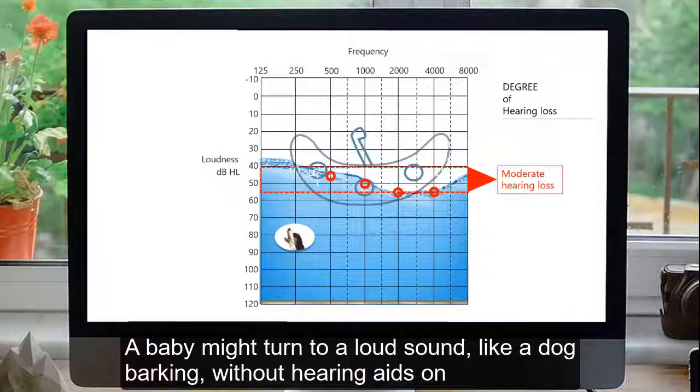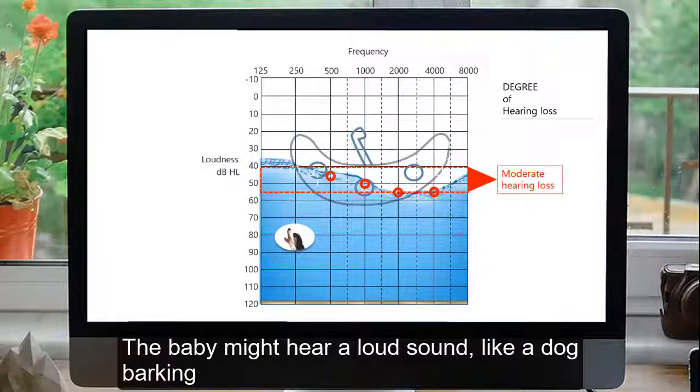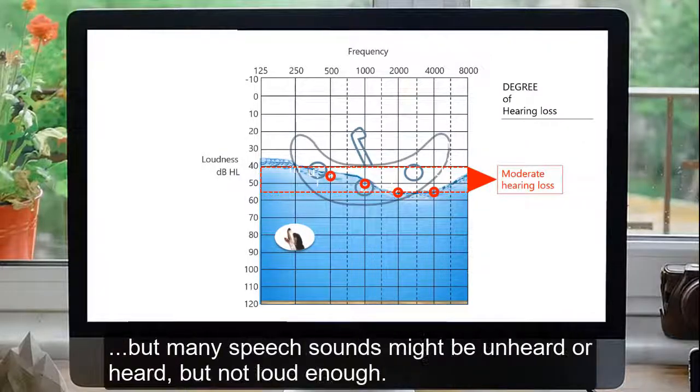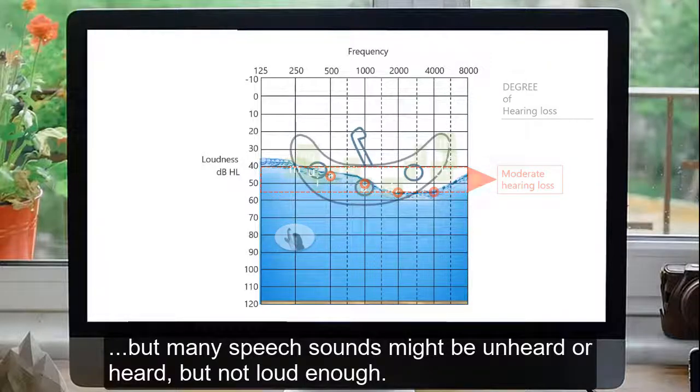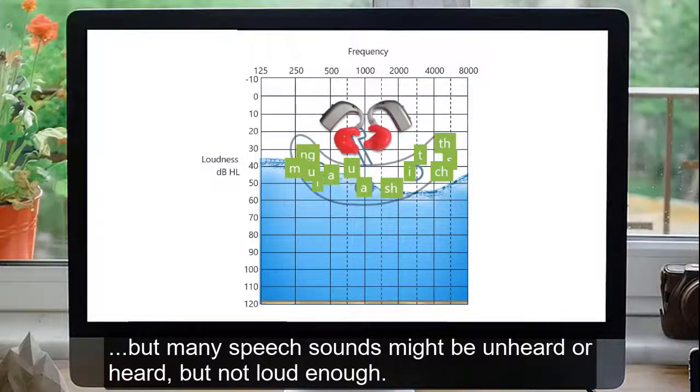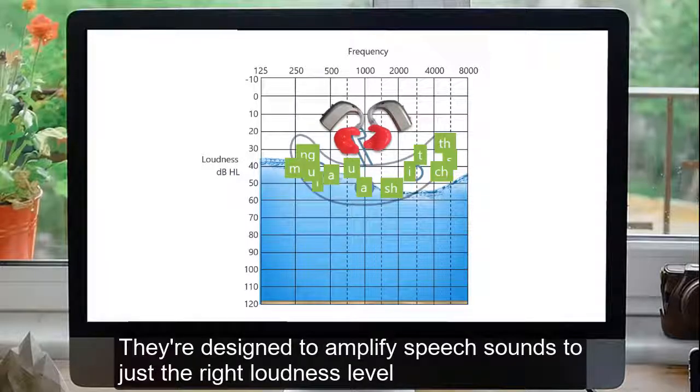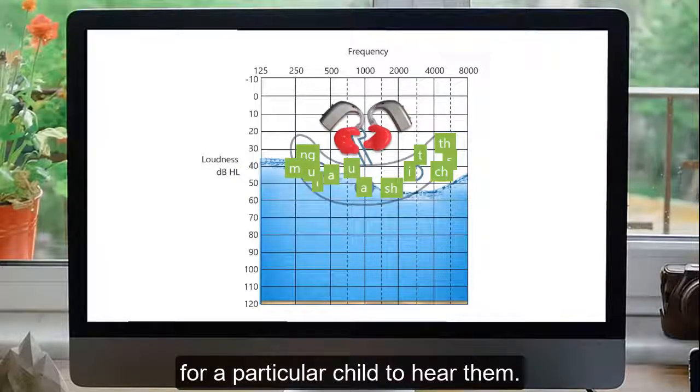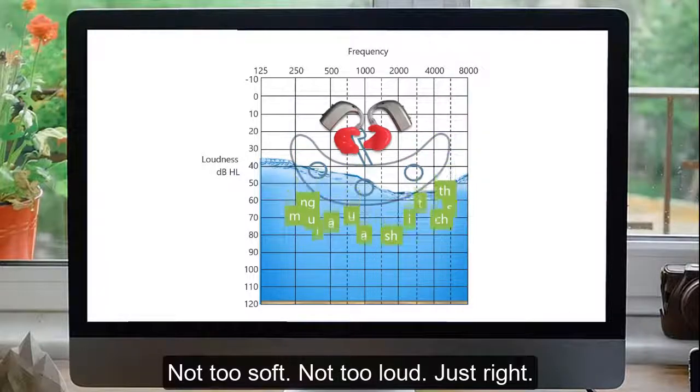A baby might turn to a loud sound like a dog barking without hearing aids on and trick the parents into thinking their child doesn't need their hearing aids at all. The baby might hear a loud sound like a dog barking, but many speech sounds might be unheard or heard but not loud enough. Hearing aids are set in a very specific way for each particular child. They are designed to amplify speech sounds to just the right loudness level for a particular child to hear them. Not too soft, not too loud, just right.